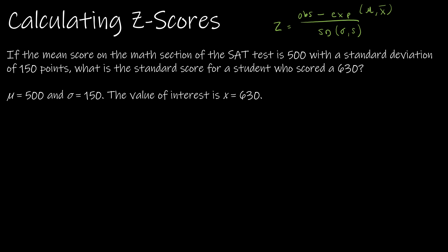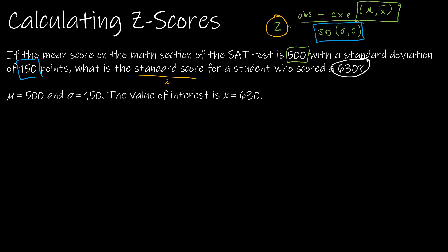Let's calculate a z-score with an example. The mean score on the math section of the SAT is 500 — that's our expected value, the mean. The standard deviation is 150 points. What is the standard score, or z, for a student who scored 630? The value 630 is our observed value — the value we're testing.